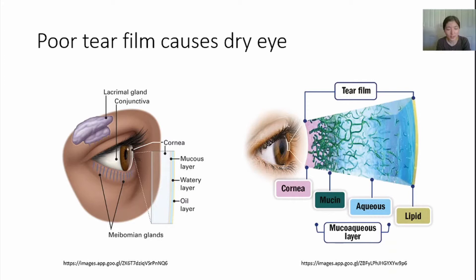The cause of dry eye is because of the poor tear film. On the surface of our cornea, there's a multi-layer tear film. Shown here are several important glands that secrete tear onto the ocular surface. The lacrimal gland will secrete the majority of the tear — that's the liquid part. And the meibomian glands are tiny glands that secrete oil.